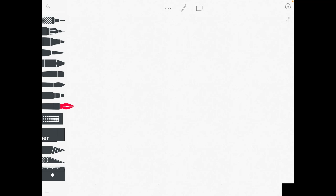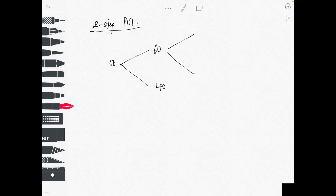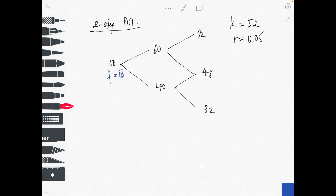For the put option example, the stock price starts at $50. It can go up to $60 or go down to $40. In step two, it can go up to $72, $48, or down to $32. The strike price K equals 52 and the interest rate r equals 5%. The question is: what is the option value at the initial node?